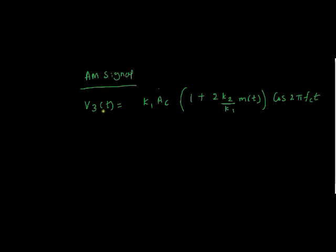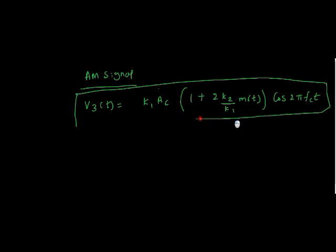First what I do, I send m(t) and the carrier signal to the summer, then I send to a nonlinear device, and then I send it through the bandpass filter. I end up with this equation.